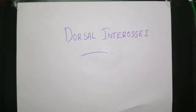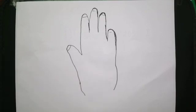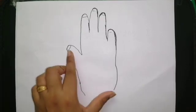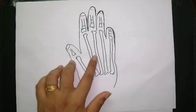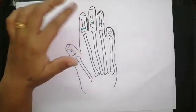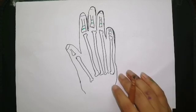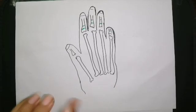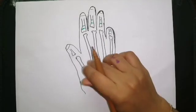In this video we are going to discuss about the dorsal interossei. We can see the diagram of the hand here. We will see the metacarpals first, from which the dorsal interossei take their origin. Unlike the palmar interossei, the dorsal interossei are bipennate muscles — they have two bellies which join together to form a tendon.